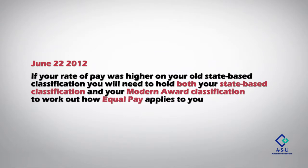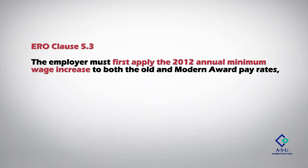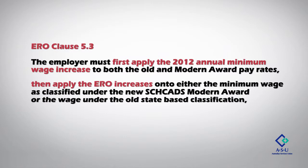It says that if your rate of pay was higher on your old state-based classification, you'll need to hold both your state-based classification — for instance, under the SACS Vic Award 2000, the TAS CSA Award, or the Clerical Admin Award — and your modern award classification, to work out how equal pay applies to you. ERO clause 5.3 states that the employer must first apply the 2012 annual minimum wage increase to both the old and modern award pay rates, then apply the ERO increases onto whichever is higher: the minimum wages under the new SCHADS Modern Award or the wage under the old state-based classification.